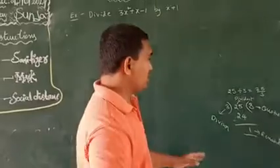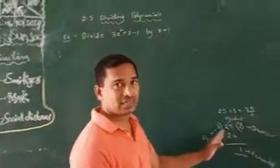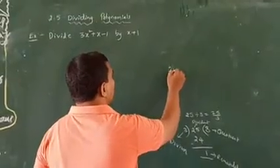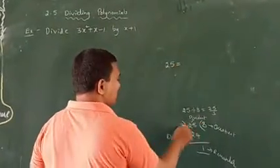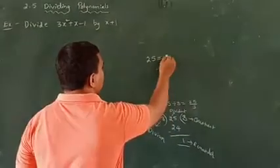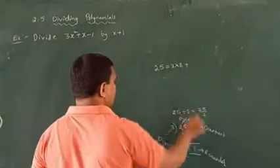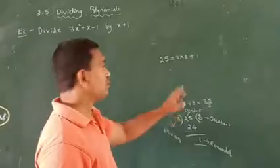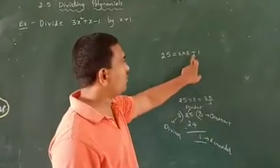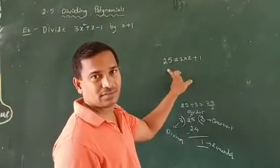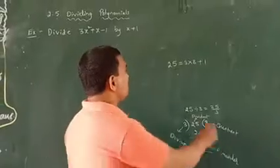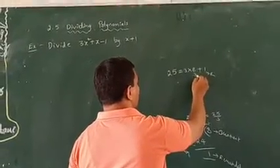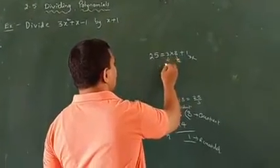Now we have a result fact. What does result fact mean? Here, 25 can be written as 3 into 8 plus 1. See, 3 eights are 24, and 24 plus 1 is 25. So here, this is the remainder, this is the quotient, and this is the dividend.